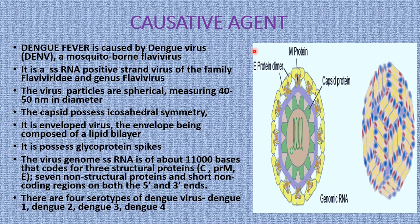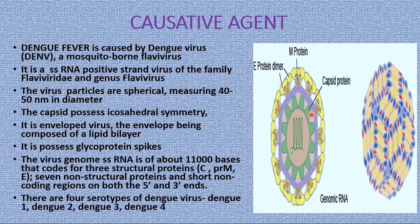Moving to the causative agent — as we already discussed, the causative agent of dengue fever is the dengue virus, which is a single-stranded RNA virus possessing a positive strand. The virus family is Flaviviridae and the genus is Flavivirus. The virus particles are spherical in shape, measuring about 40 to 50 nanometers in diameter. The capsid protein has icosahedral symmetry, and it is enveloped by a lipid bilayer and also possesses glycoprotein spikes.